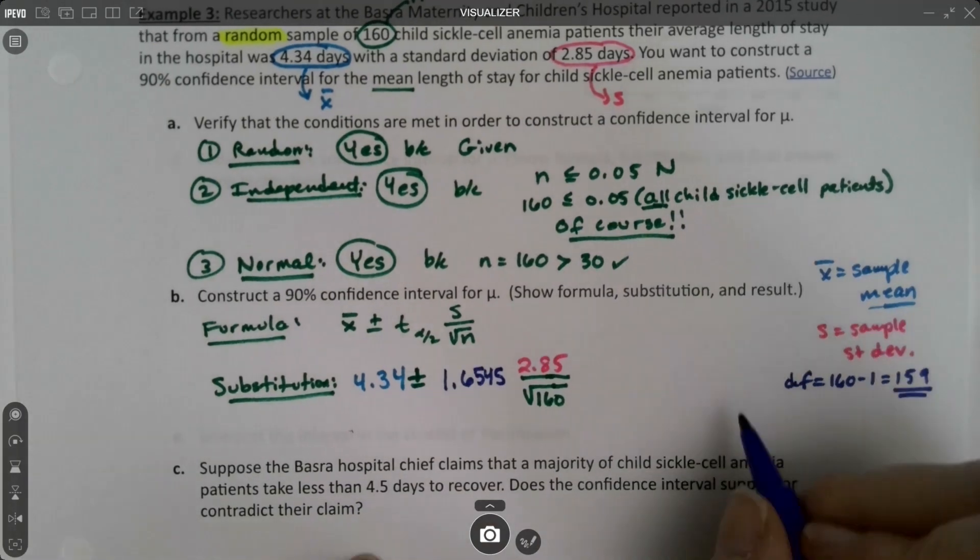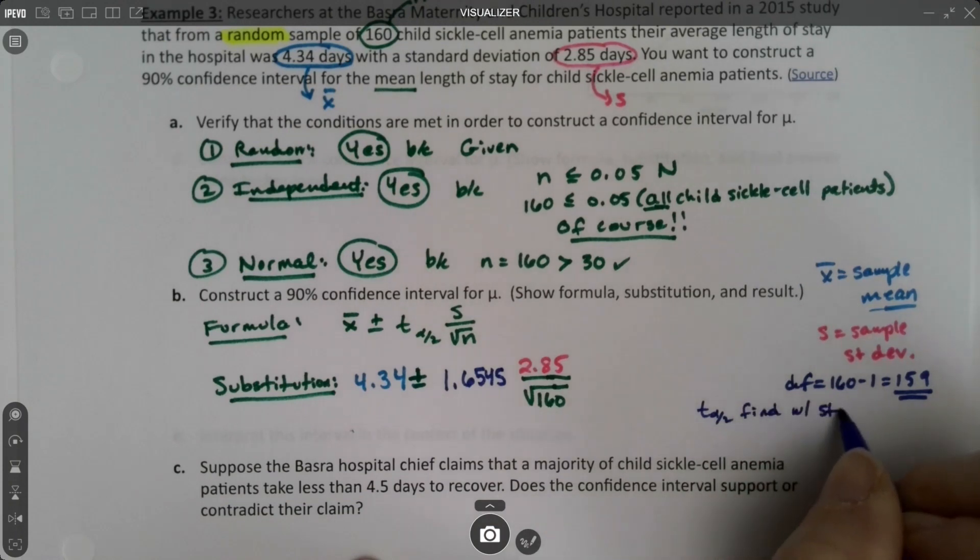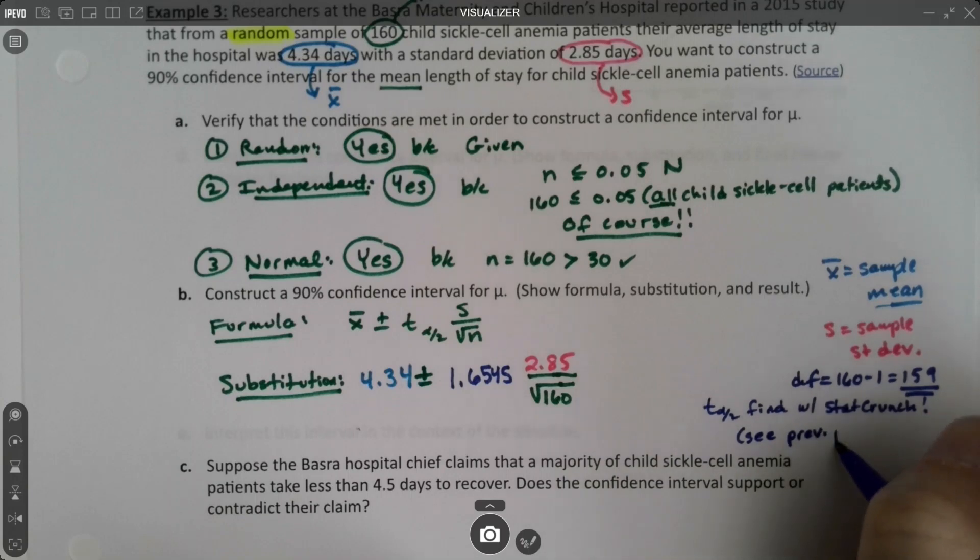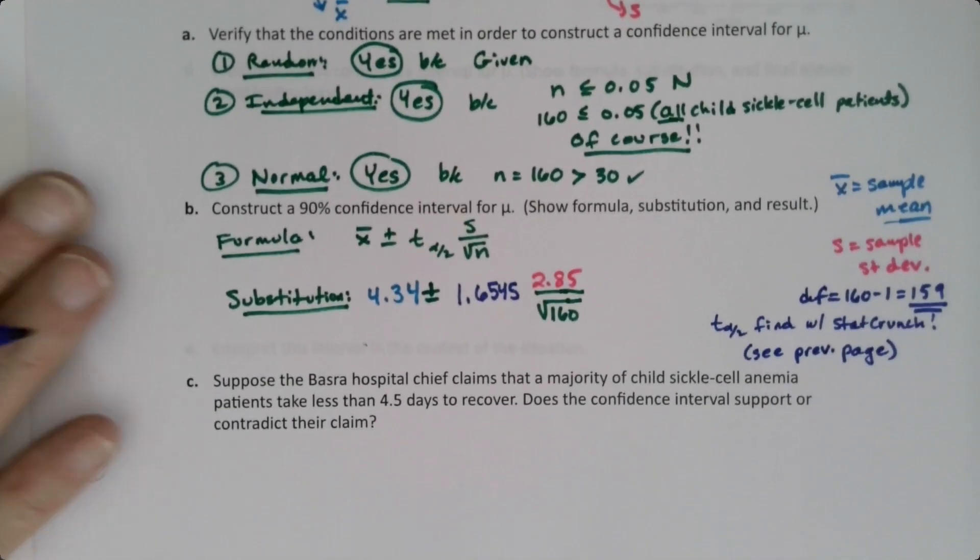1.6545. And I'll just make a little note. The t alpha over 2, find with StatCrunch. See previous page because we just did.